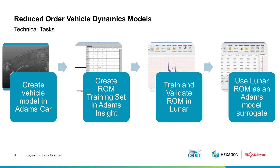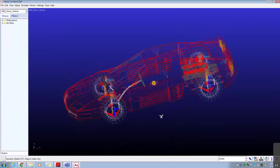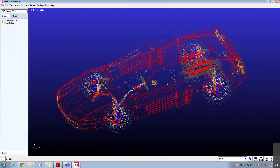We'll go through these steps in the video and give you a detailed description of the technical tasks involved. First, ADAMS is used to set up a model of the entire vehicle. The ADAMS parameters that are inputs to the reduced order model are then selected and parameter ranges that span the entire design space are defined. The MDI demo vehicle from the ADAMS car database is used. We'll simulate the car on a cleat road and look at the effect of the suspension spring and damper scale factors on the chassis vertical acceleration.